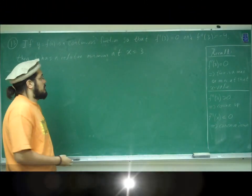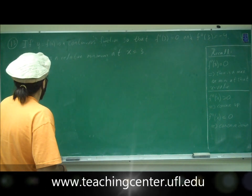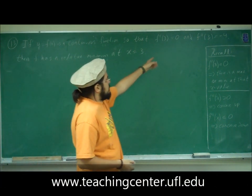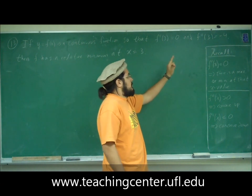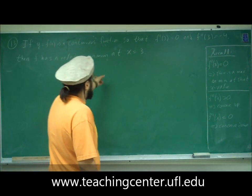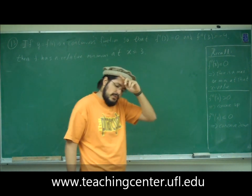Now we're in problem 13. So problem 13 reads, if y equals f of x is a continuous function so that f prime of 3 is equal to 0 and f double prime of 3 is equal to negative 4, then f has a relative minimum at x equals 3. So you want to see if this is true or false.